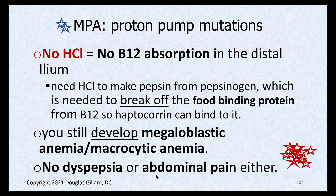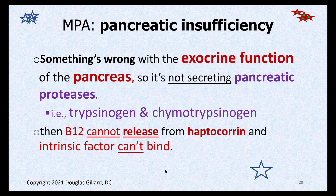Another MPA type: pancreatic insufficiency (exocrine pancreatic insufficiency). If the exocrine pancreas isn't secreting pancreatic proteases — trypsinogen and chymotrypsin — then B12 cannot be released from haptocorrin. You need pancreatic proteases to break B12 loose from haptocorrin so intrinsic factor can bind. Without that, B12 and haptocorrin cannot be absorbed by CUBAM receptors in the distal ileum, resulting in vitamin B12 deficiency.